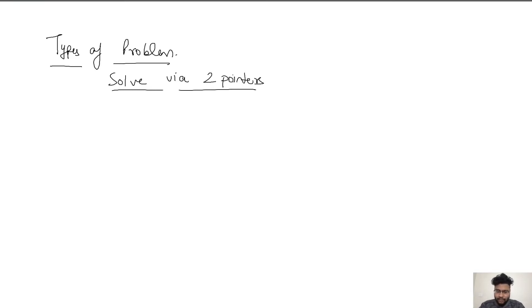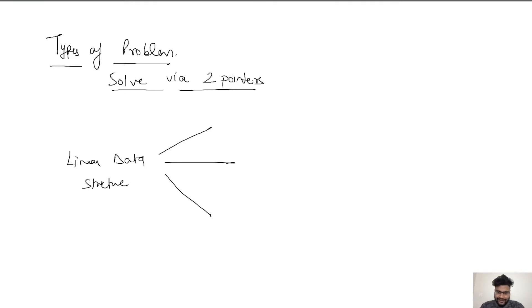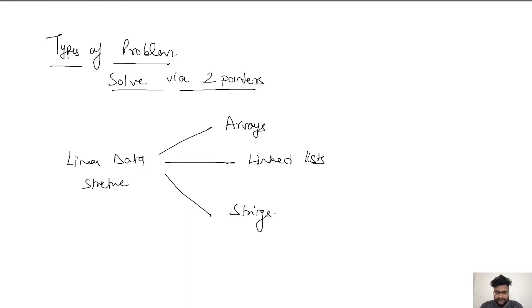Before we move on to the types of problems, I mentioned in the very first session that two pointers are generally applicable only for linear data structures. When we discuss two pointers, we take into account only three kinds of linear data structures, which are mainly arrays, linked lists, and strings. There are other linear data structures as well, but most questions fall within these three buckets.